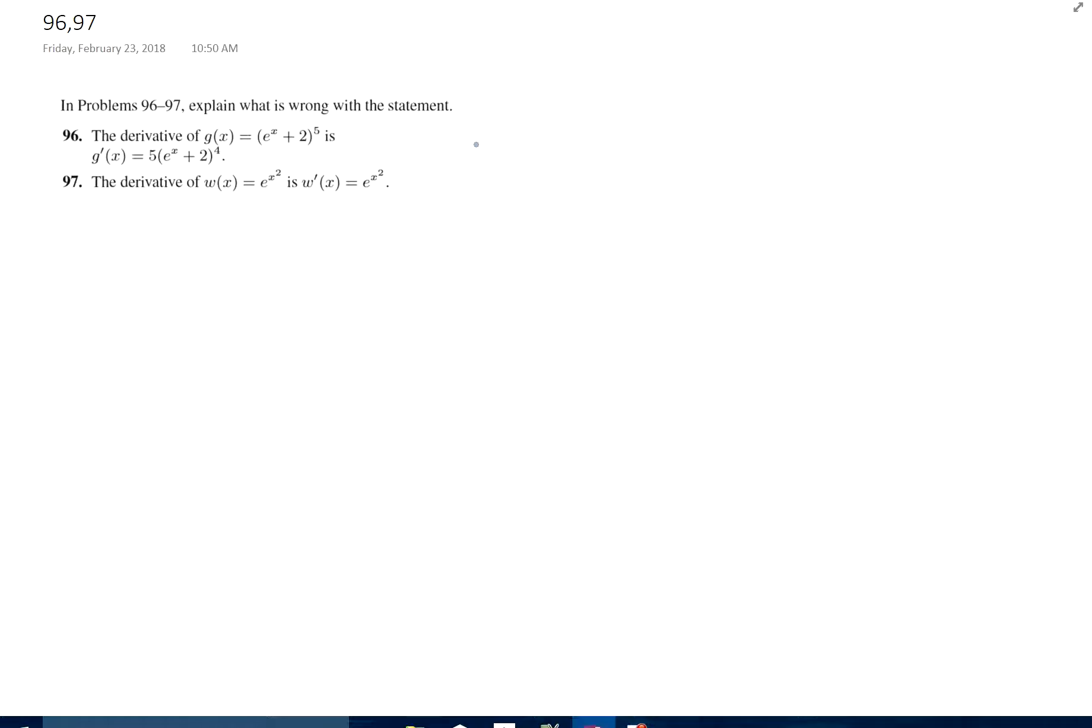Okay, what's wrong with this statement? Well, if I wanted to find g prime of x for number 96, I'm going to do the chain rule and get 5 times e to the x plus 2 to the 4th times that.